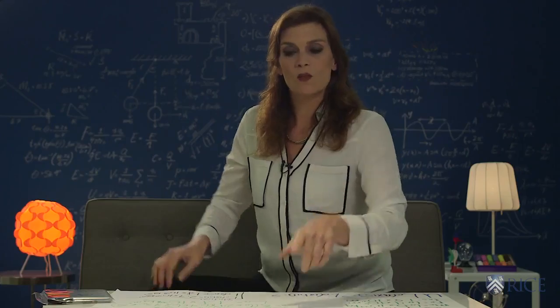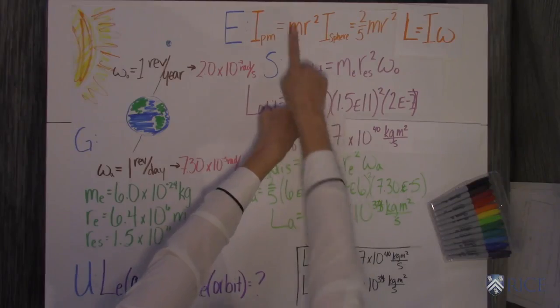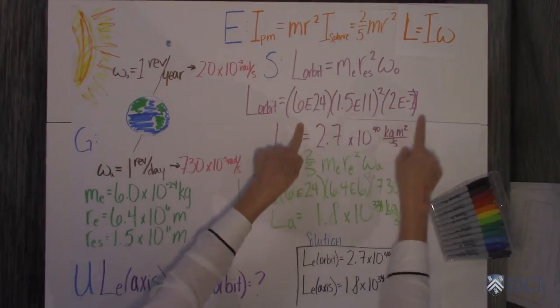Okay, so let's plug in what we know. Let's start with the orbit. Like I said, it's a point mass, so it's I times omega. You fill in all that you know.